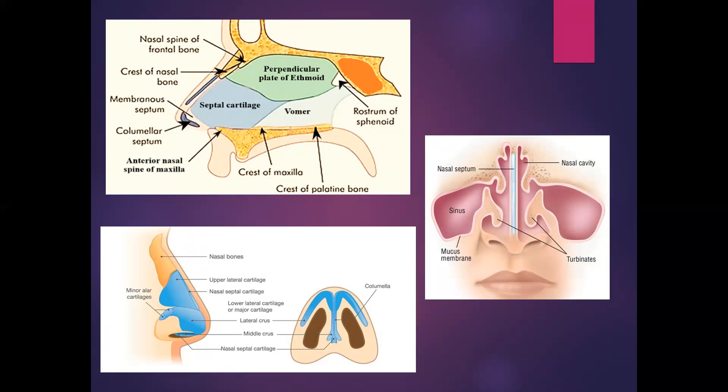Then you have the bony parts of the septum — the vomer and the perpendicular plate of the ethmoid, as demonstrated in the picture on the top left.